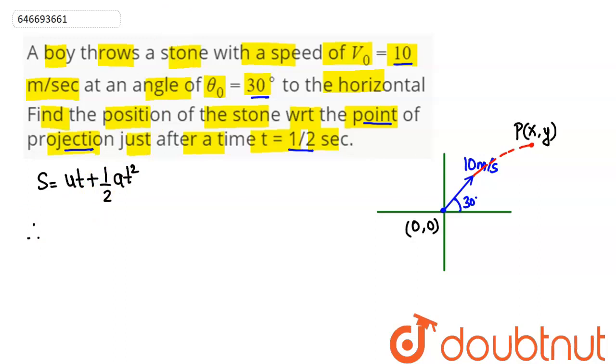So for x direction we have displacement as plus x. Initial velocity component along the x direction comes out to be 10 cos of 30 degrees and time is 1 upon 2. Acceleration along x direction will be 0. So this simplifies as 5 into cos 30 degrees which comes out as root 3 upon 2 meter. This is the x component.